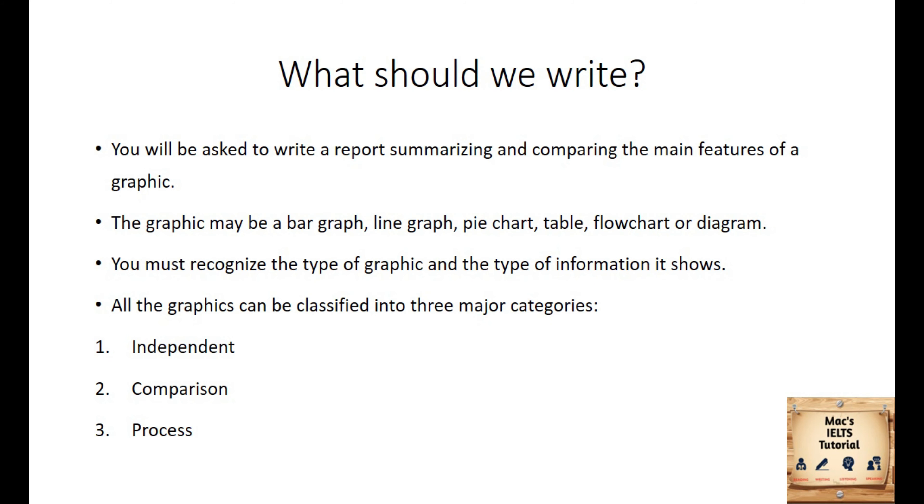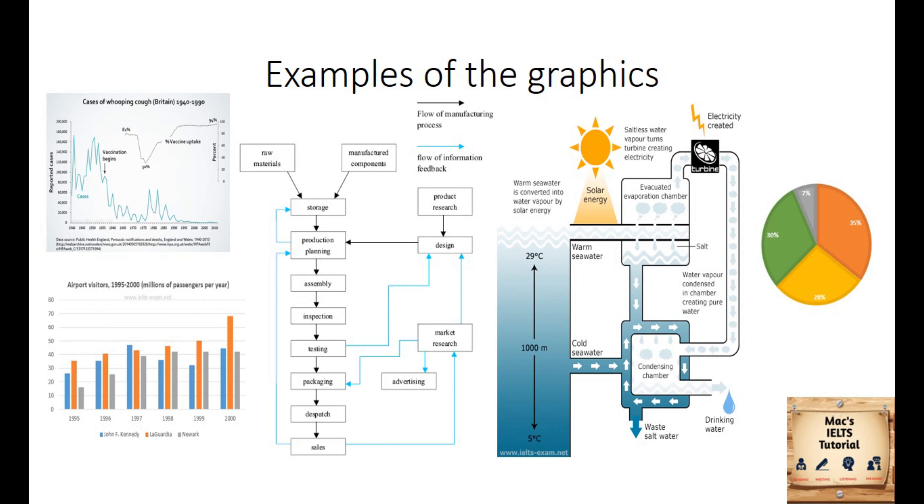In the academic writing, you are supposed to write a report summarizing and comparing the main features of a given bar graph, line graph, pie chart, a table or even a diagram or flow chart. The graphics you get can further be classified into three types. These are few examples of the types of graphics which will appear in the examination.